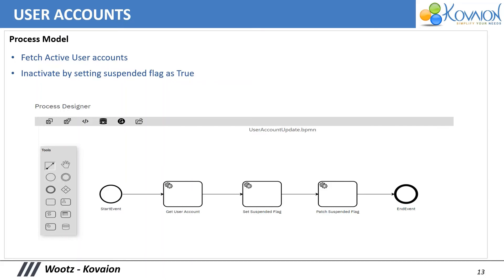This is a sample process model to inactivate a user. There are three steps in the process model: fetch the user account, set the value — which is the actual data masking — and then patch the masked value into HCM Cloud. When this process model is run, the user will be inactivated in HCM Cloud.